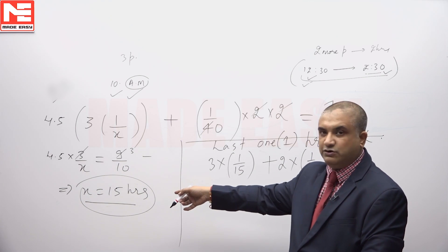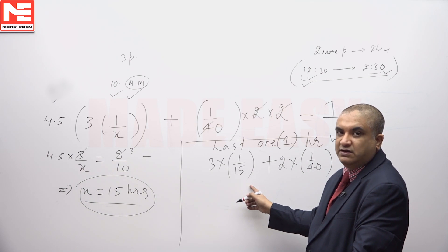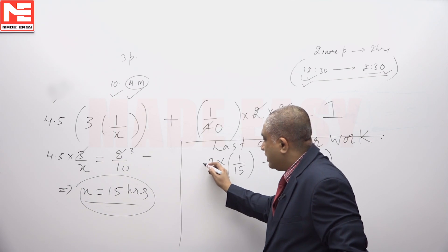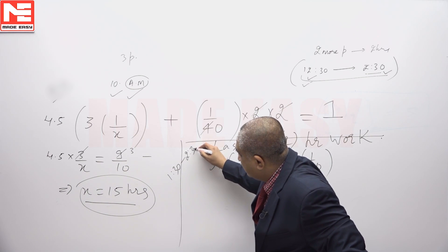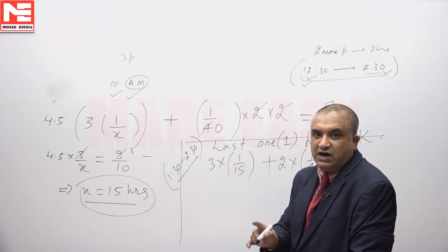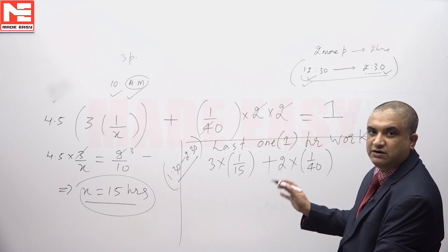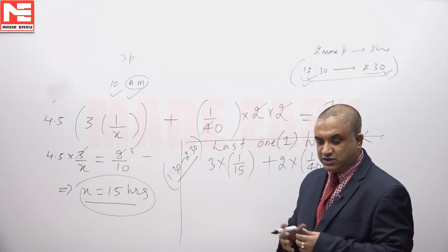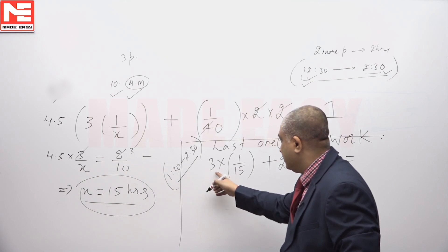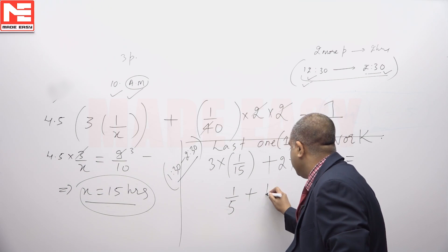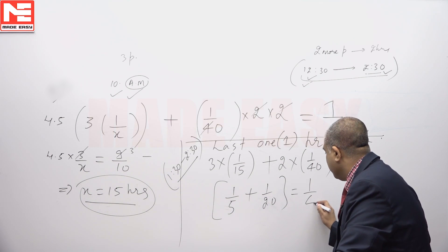We have X = 15, so the work done by 1 initial pipe per hour is 1/15. There are 3 such pipes working for 1 hour, calculating the last-1-hour work from 1:30 till 2:30. Last 1-hour work = 3 × (1/15) + 2 × (1/40) = 3/15 + 2/40 = 1/5 + 1/20 = 4/20 + 1/20 = 5/20 = 1/4.